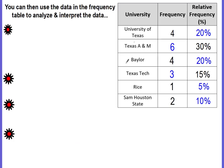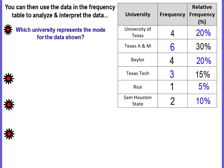We can use the data in our relative frequency table to analyze and interpret it. Which university represents the mode for the data? Mode means the most — just look at the highest percent, which is 30 percent — Texas A&M.